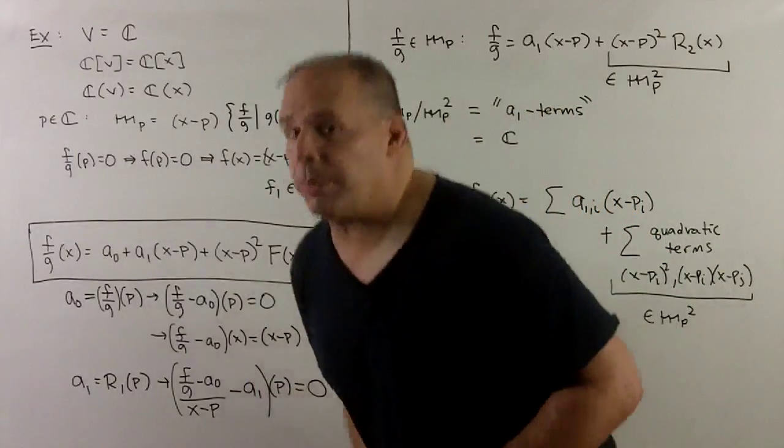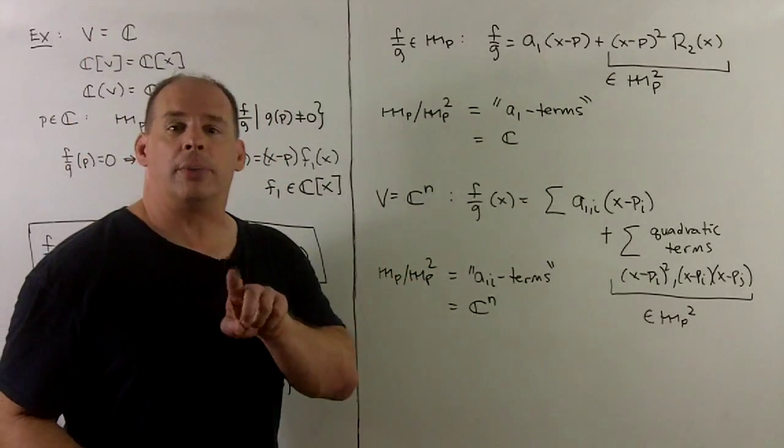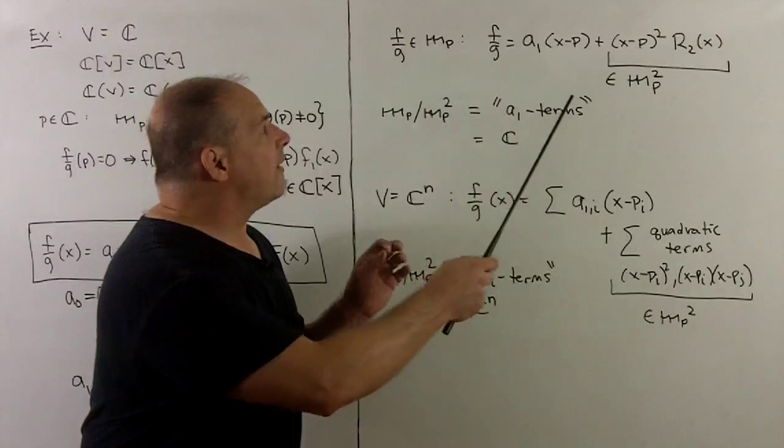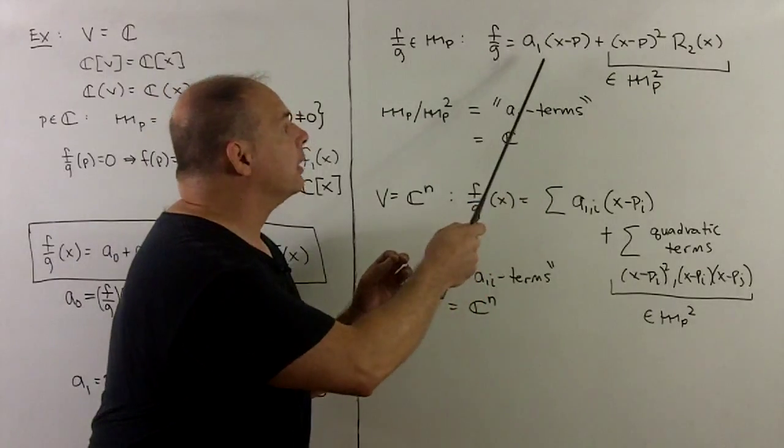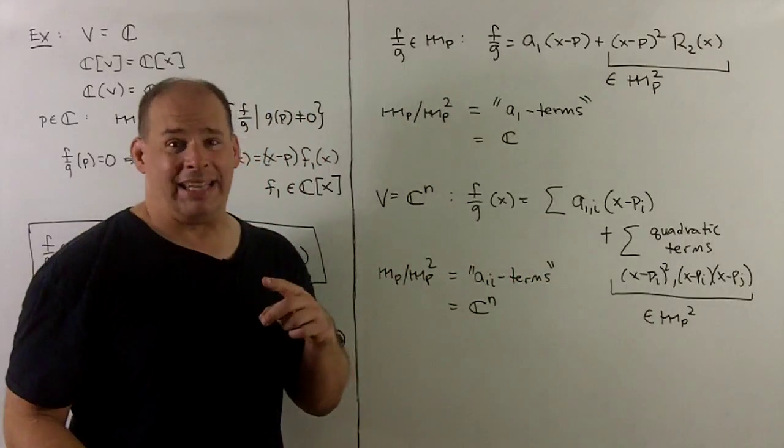Now how do we interpret? If I have an element in the maximal ideal, that means the a₀ term equals zero. So what we're left with are these two terms here. The second part is inside the square of our maximal ideal.